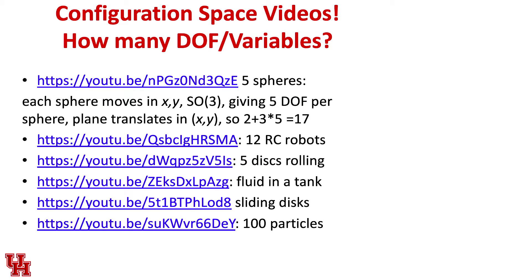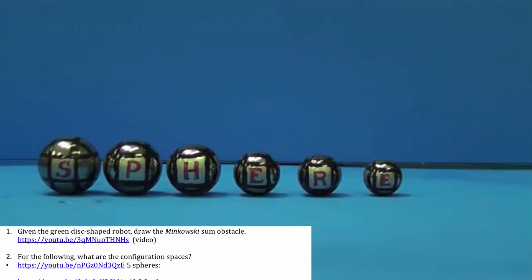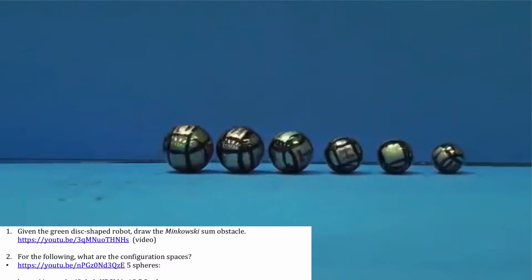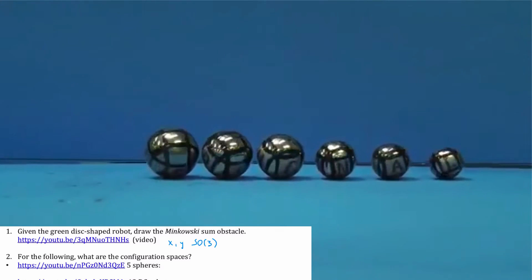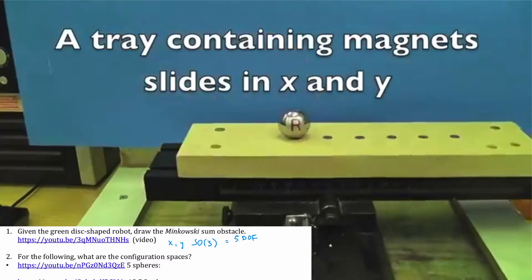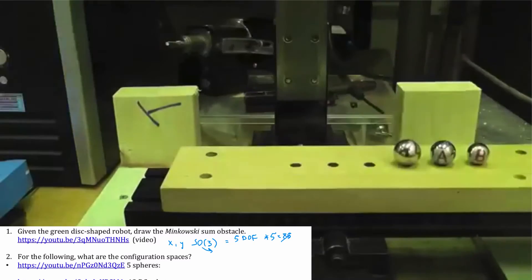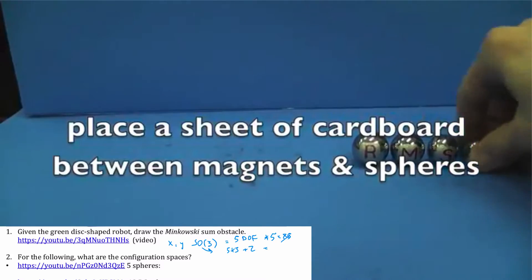Let's do a few more examples from some robots of my past. Here's a project called a plate-ball system: a plate moves underneath with magnets, and metal spheres on top roll. Each sphere's orientation can change — that's SO(3) — and each sphere has an X and Y position, giving five DOFs per sphere. With five spheres that would be 25, but the relative XY positions are constrained, so we really just have SO(3) giving three degrees of freedom, plus two for XY, totaling 17.